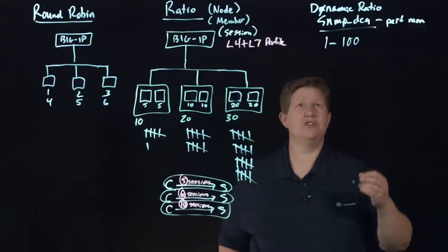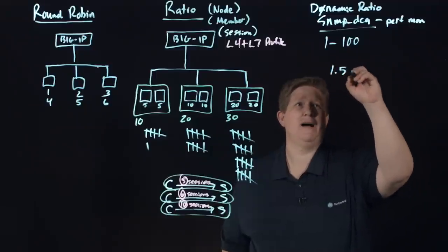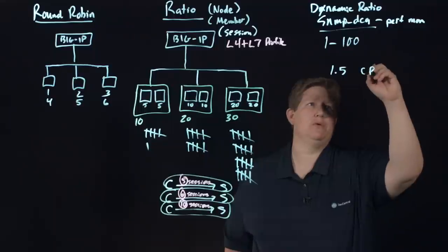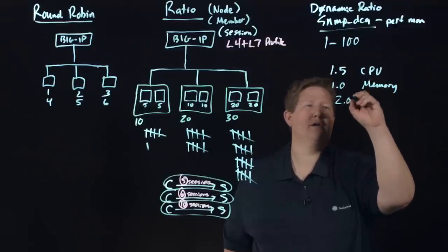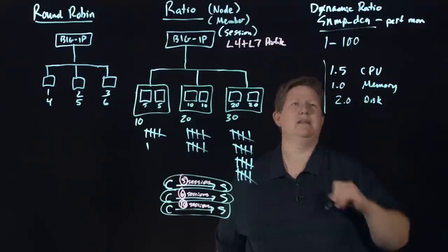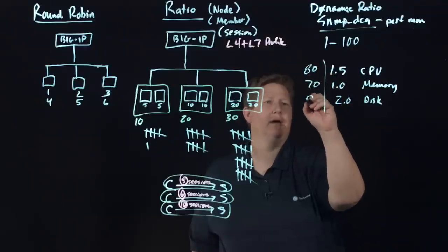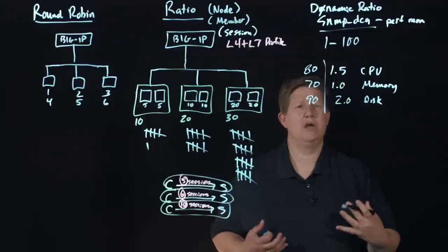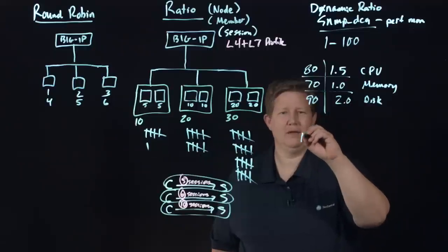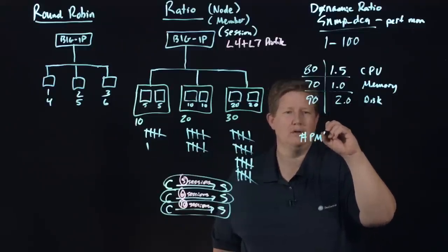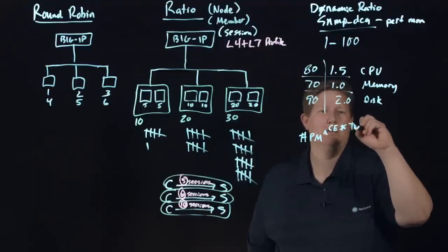As far as how the ratio itself is calculated, there is an equation for that. If you look at the SNMP DCA monitor, the default I think is 1.5 for CPU as the coefficient, 1.0 is the memory coefficient, and 2.0 is the disk coefficient. If I recall correctly, I think CPU is 80, memory is 70, and disk is 90. Basically what Big IP will do with that data is, I think I have this calculation correctly, it's going to take the number of pool members and you do it to the exponent of your coefficient times your threshold minus your utilization over your threshold.